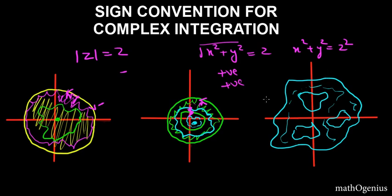Now, predict for yourself what the direction will be, then pause the video. Going in this direction on the outer curve is positive; going the other way is negative, because your left hand will be outside the region. So overall: counterclockwise on the outer boundary is positive, clockwise on the inner boundary is negative, and their opposites apply accordingly. This is the sign convention for complex integration. I hope this helped — ask any questions in the comments below, and always remember that math is everything.